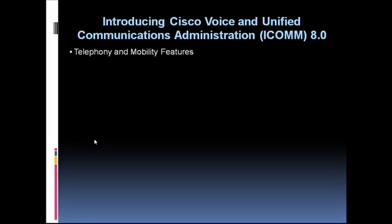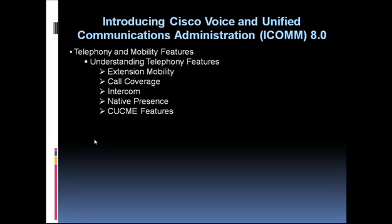In addition to basic phone calls, Cisco provides many bonus telephony features. There are several mobility features, including extension mobility — where you can go from one office to another and log into the phone there. Similar to Windows roaming profiles, when you log into a phone at another site, it gets your speed dials, directory number, and soft keys. There's also call coverage — when a call comes in and you're unavailable, it can go to voicemail or a hunt group. Other features include intercom between a manager and assistant.